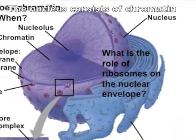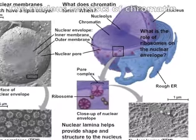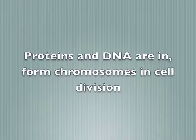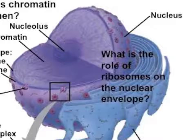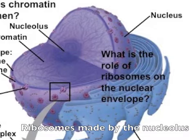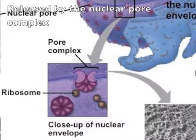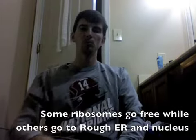The nucleus consists of chromatin. Proteins and DNA are in the form of chromosomes and are involved in cell division. Ribosomes are made by the nucleolus and released through the nuclear pore complex. Some ribosomes go free while others attach to the rough endoplasmic reticulum.